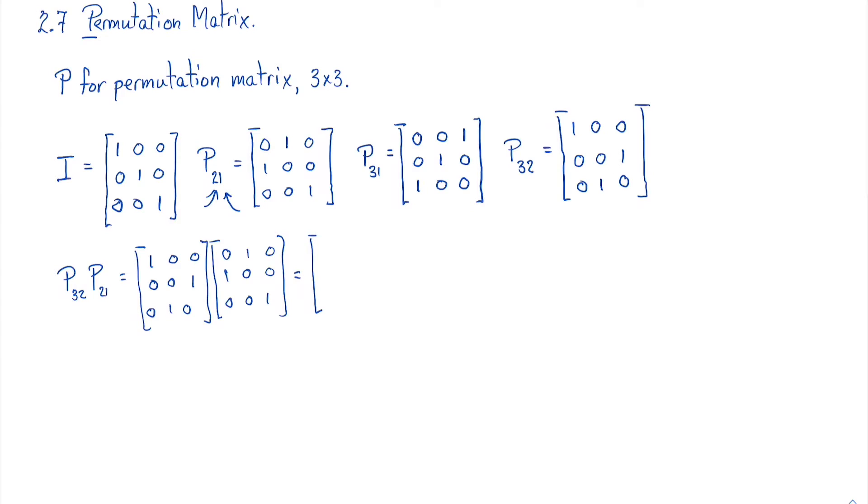Well, what does this do? This just says we copy the first row. So that's 0, 1, 0. Then we take the third row and put it into this second row. So the third row is 0, 0, 1. And then it says we copy the second row. Well, the second row is 1, 0, 0. And that gives us a new permutation matrix, P_32 times P_21.